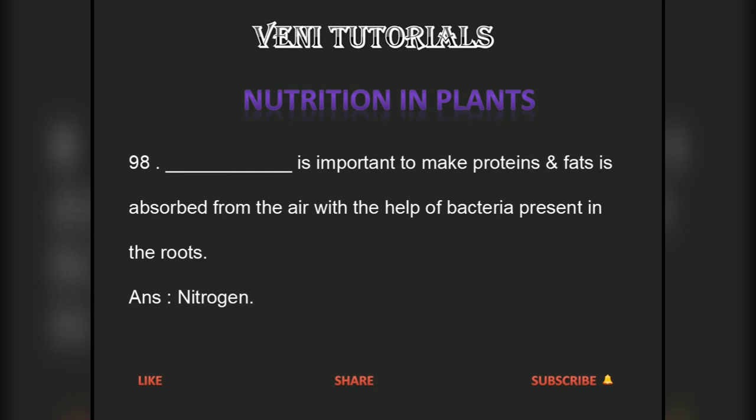Dash is important to make proteins and fats, and is absorbed from the air with the help of bacteria present in the roots. Answer: Nitrogen.